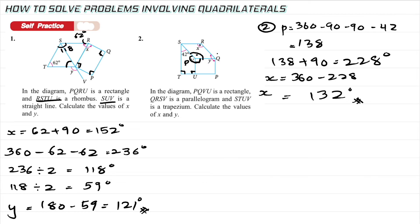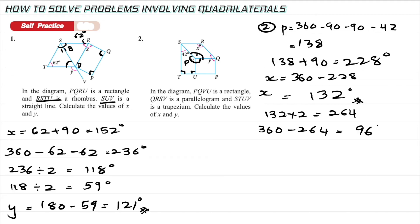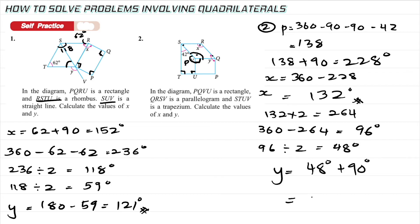To find Y: take 132 × 2 = 264 (for both opposite angles in the parallelogram). Then 360 − 264 = 96, which is the sum of the other two angles. So each is 96 ÷ 2 = 48 degrees. But 48 is just the angle portion here — we add the 90-degree rectangle angle, so Y = 48 + 90 = 138 degrees.